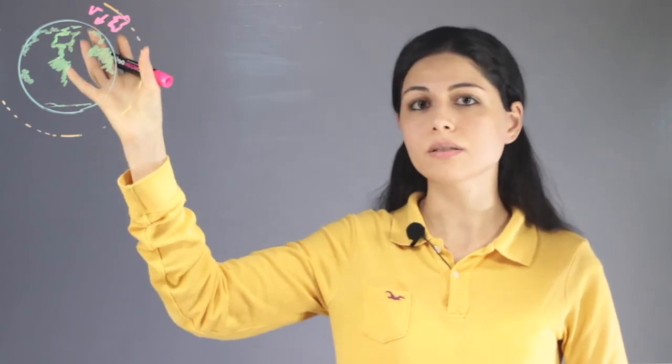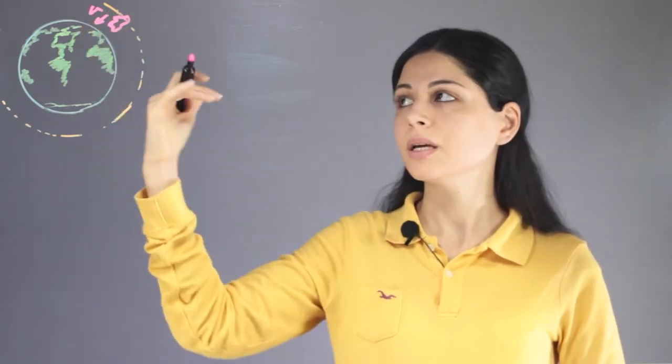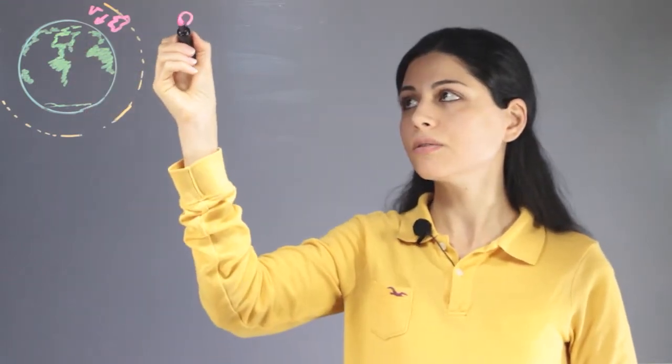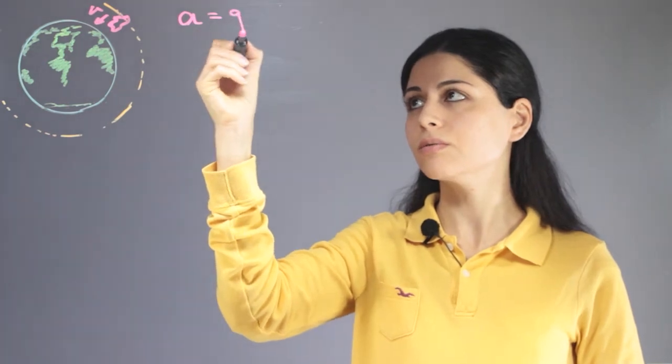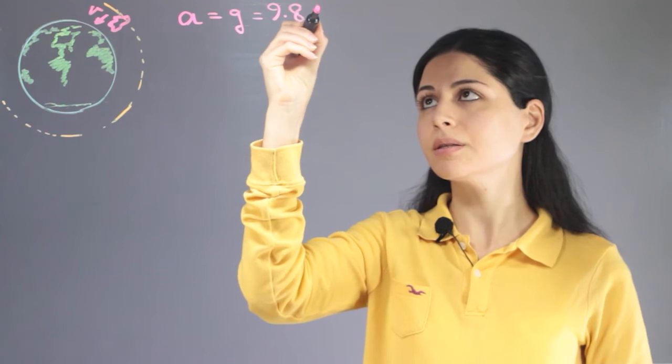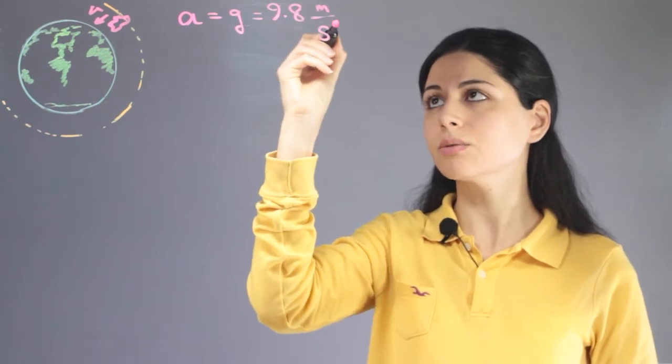If we consider the velocity of asteroids as v, this is the instantaneous velocity. We know that the acceleration of the Earth is equal to g, which has a value of 9.8 meters per second squared.